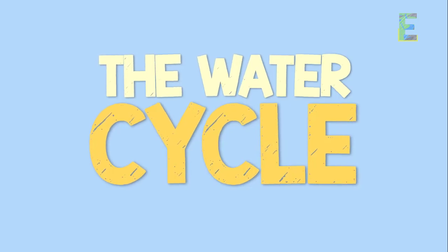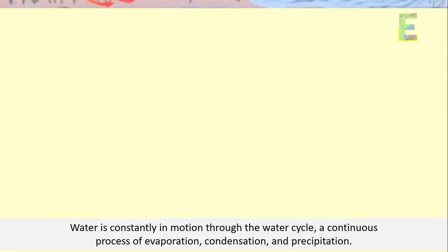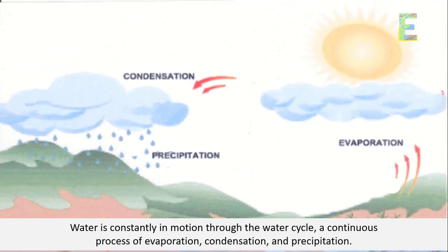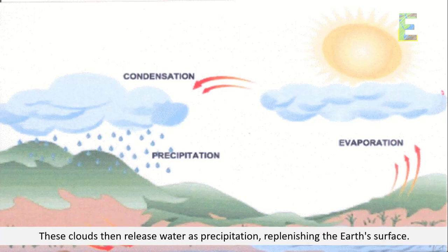The Water Cycle. Water is constantly in motion through the water cycle, a continuous process of evaporation, condensation, and precipitation. It begins with water evaporating from oceans, lakes, and rivers, forming clouds. These clouds then release water as precipitation, replenishing the Earth's surface.